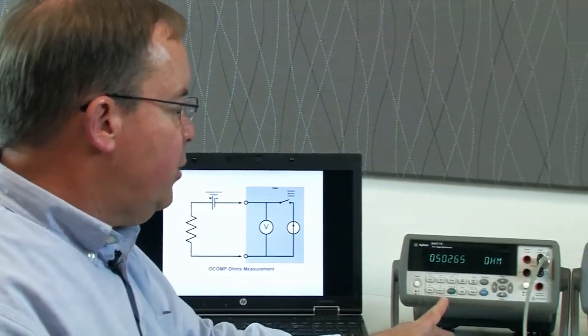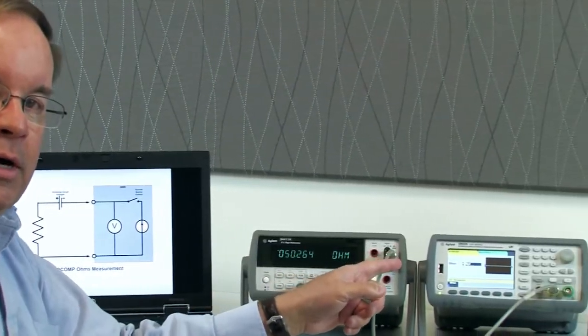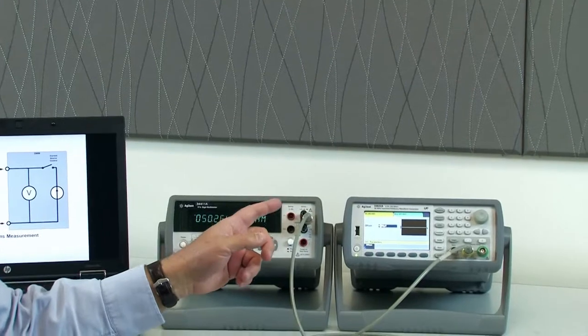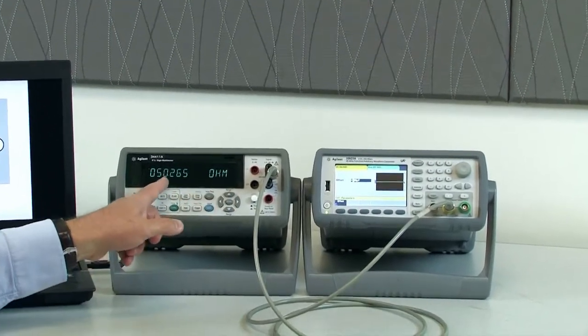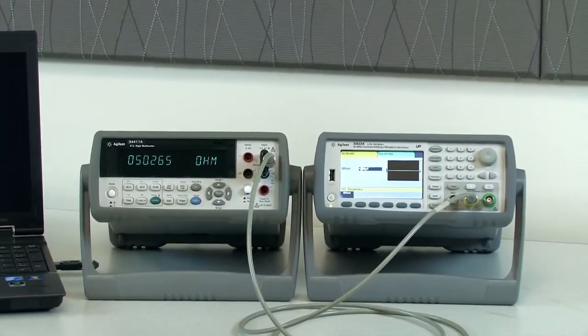Over here on the 34411 volt digital multimeter, I'm measuring the output impedance of a function generator, which should nominally be 50 ohms. We can see we're reading about 50.26 ohms.